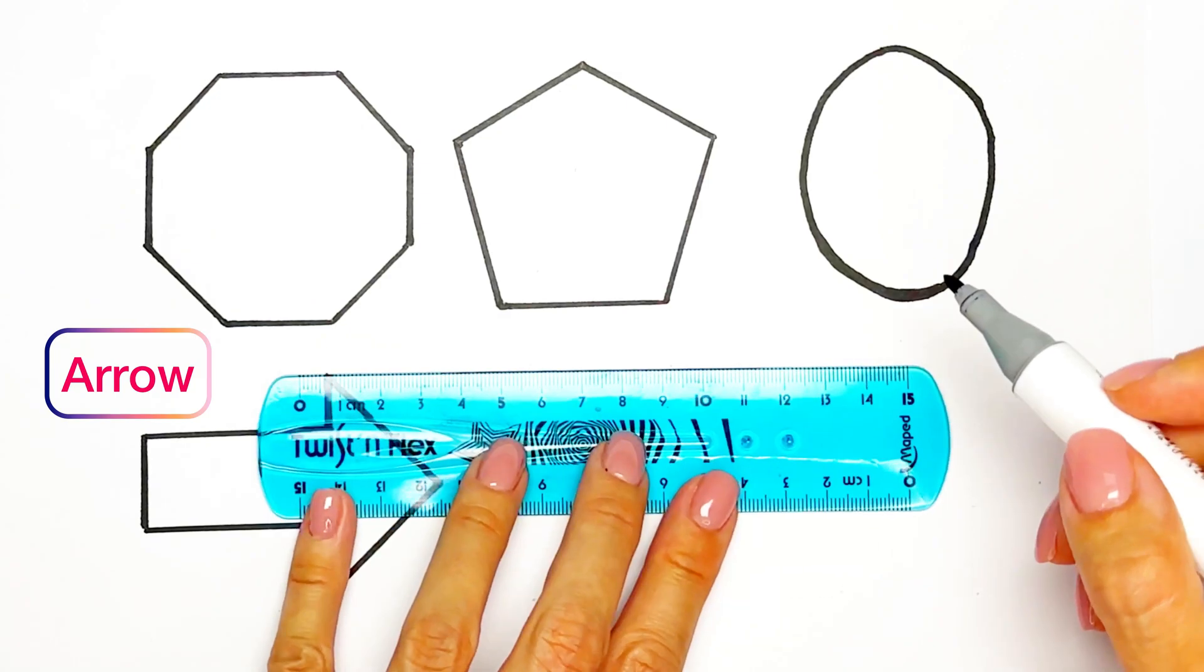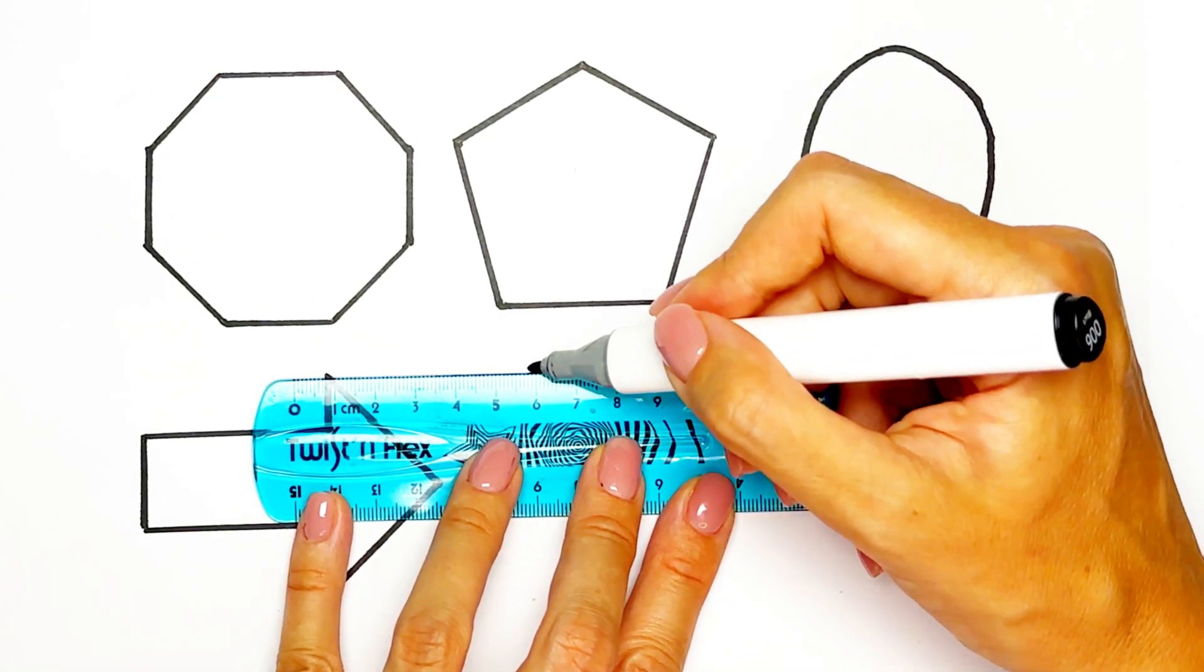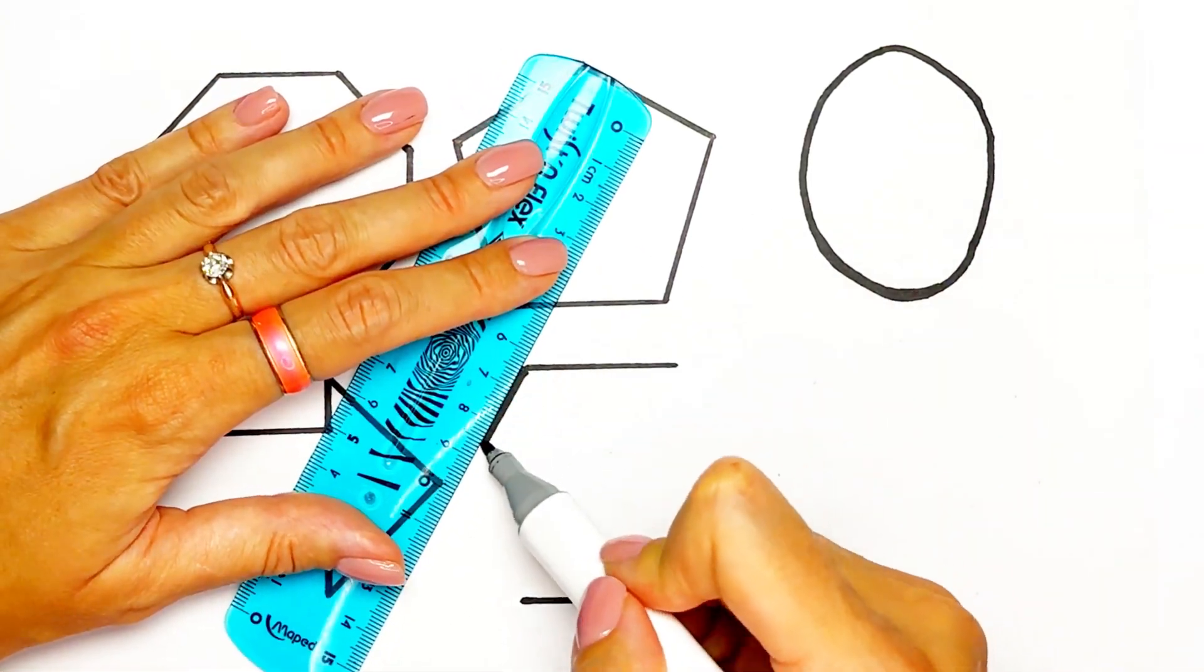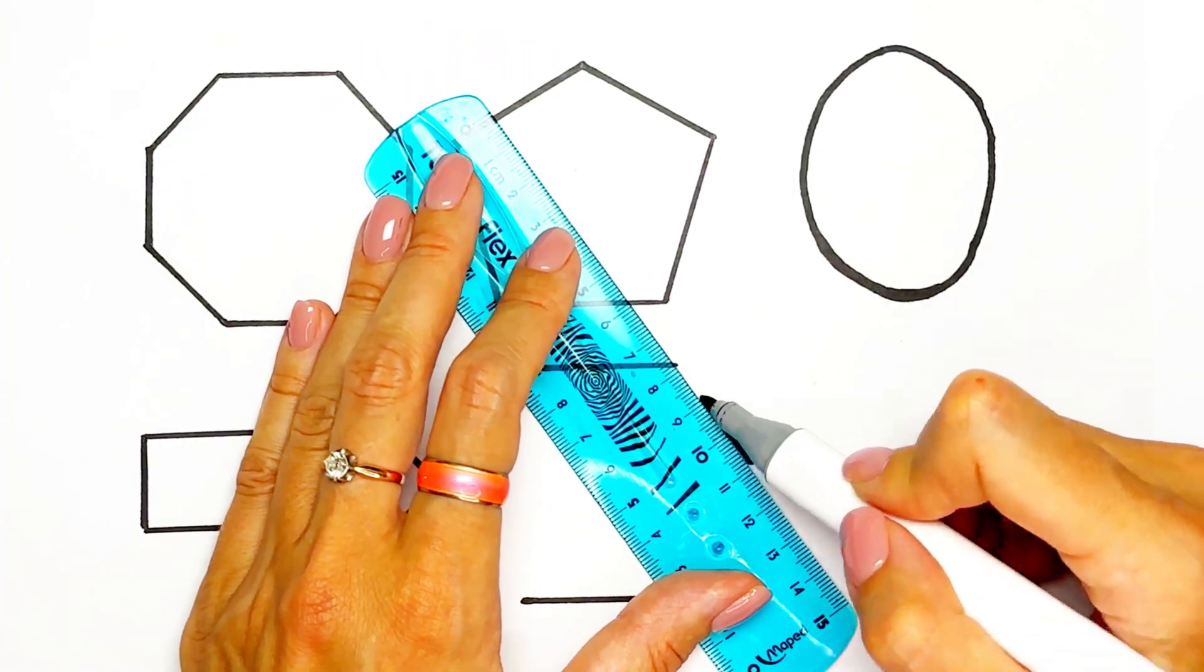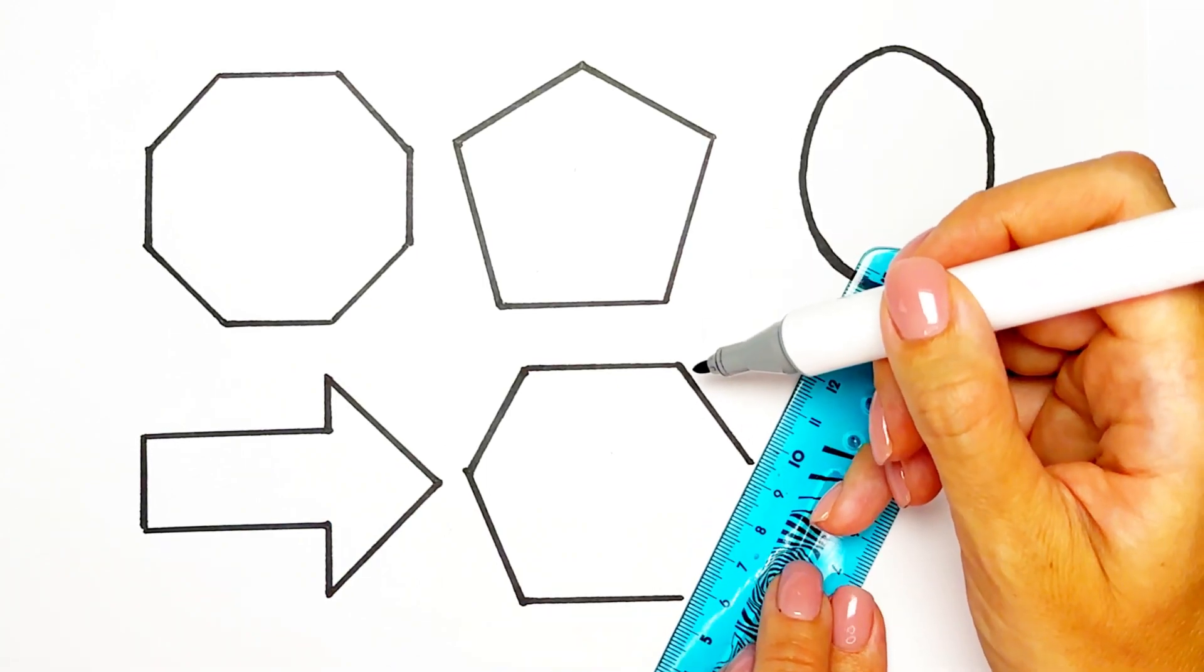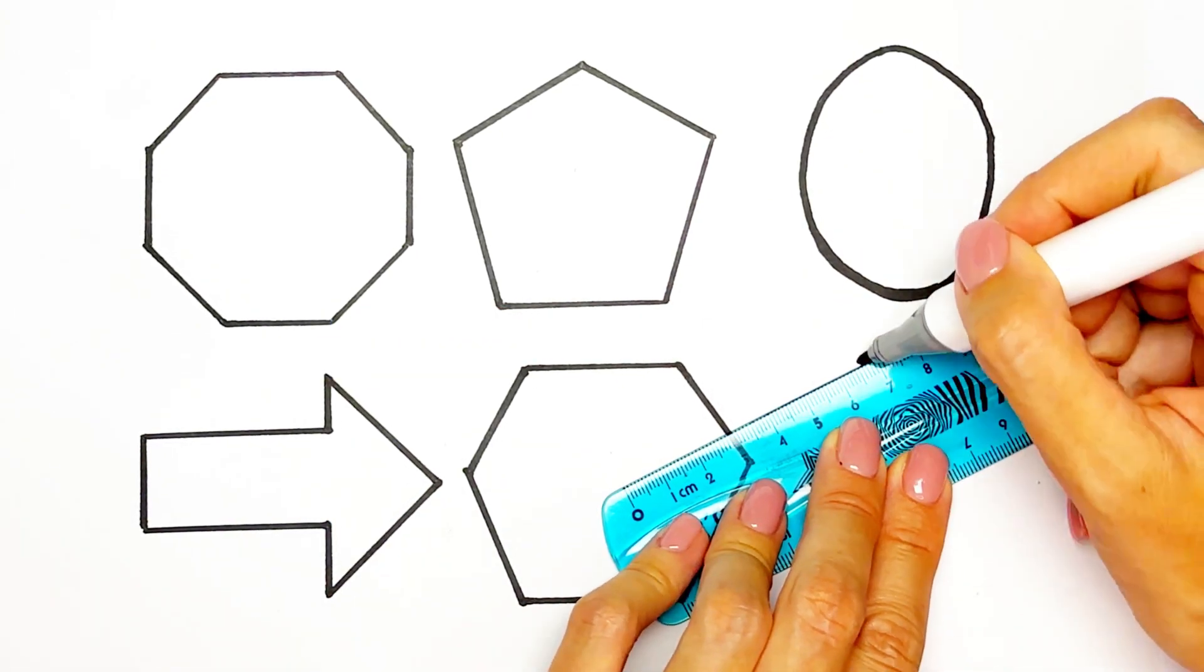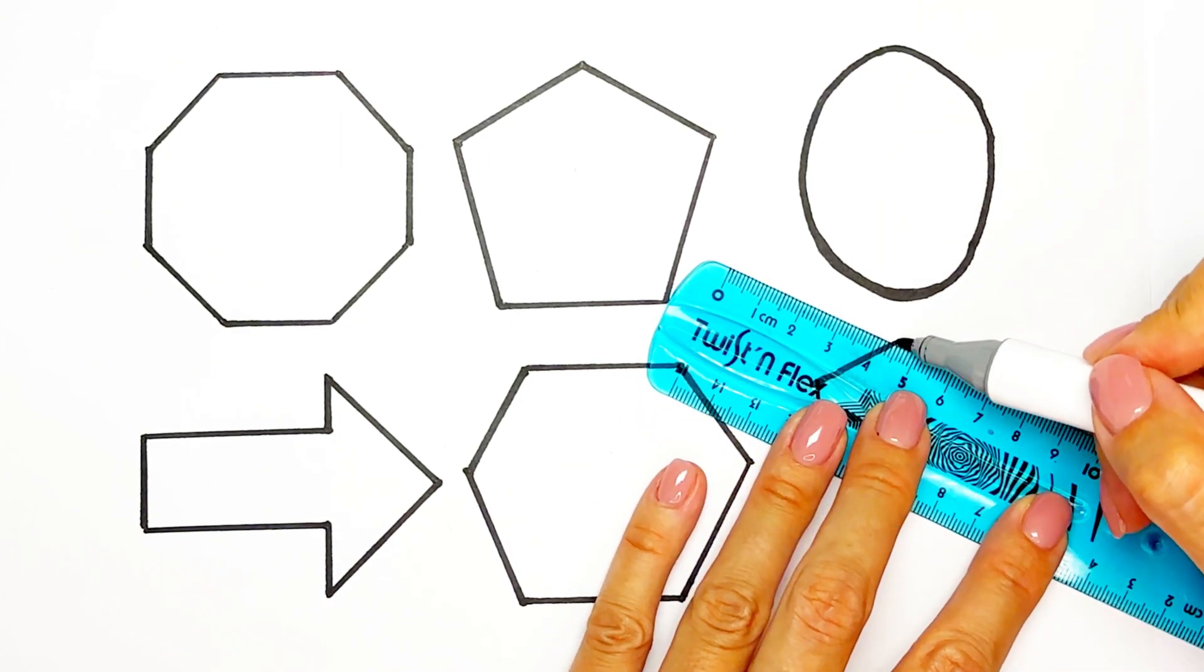Next one is hexagon. Hexagon has six angles. And heptagon. Heptagon has seven angles.